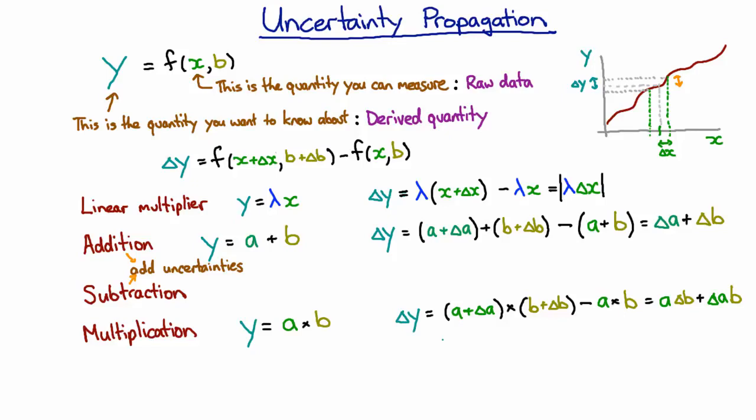A good way to remember that is to divide both sides by y. So if we have our error in y divided by y, that's going to be what we just worked out divided by our definition of y in the first place. So we've got two terms here. When we have the first term, the a's are going to cancel, and the second term, the b's are going to cancel. This quantity where you divide the uncertainty by the quantity itself is called the relative uncertainty.